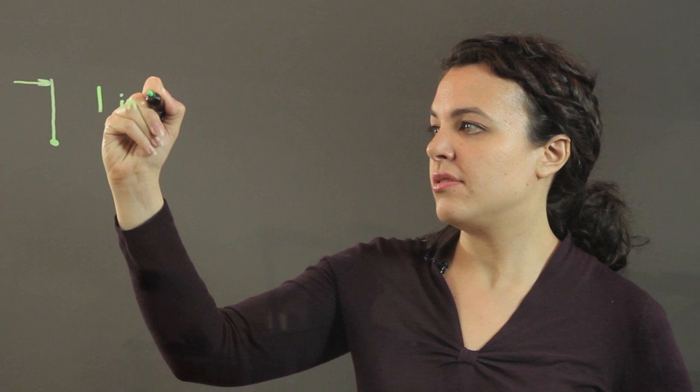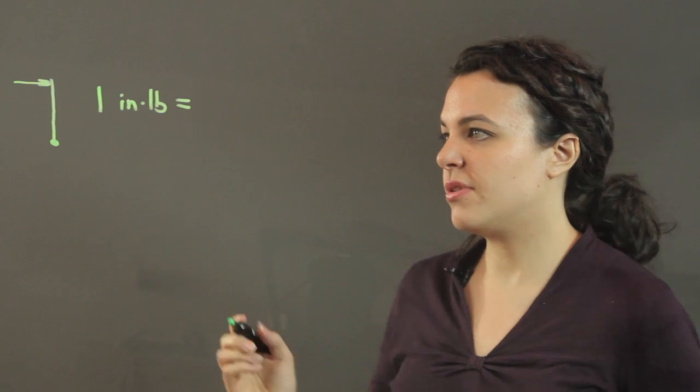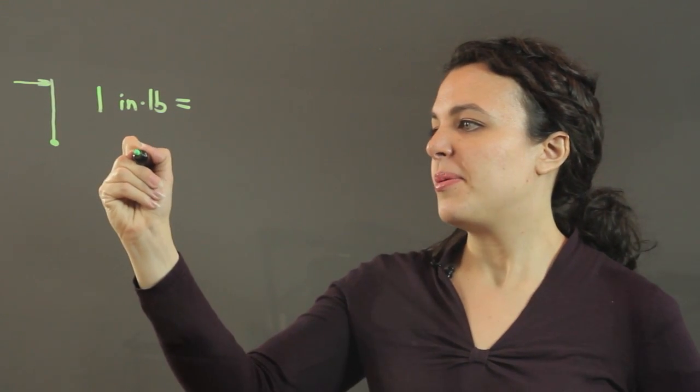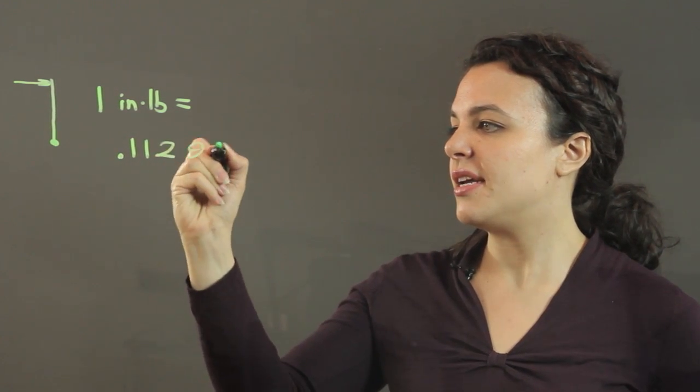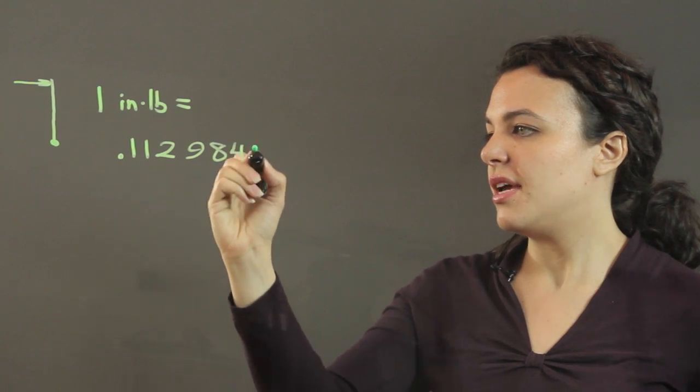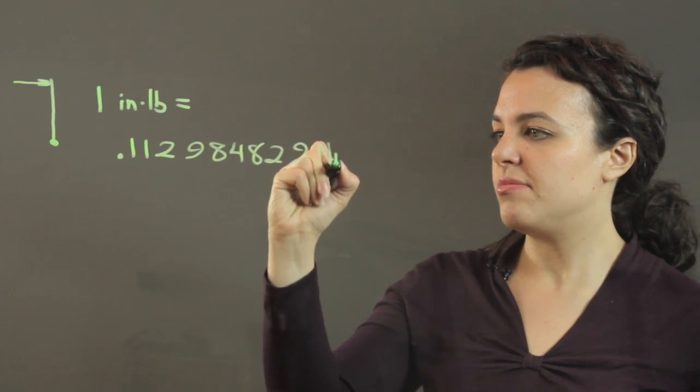One inch-pound is equal to, this is a long one, 0.112984829 newton-meters.